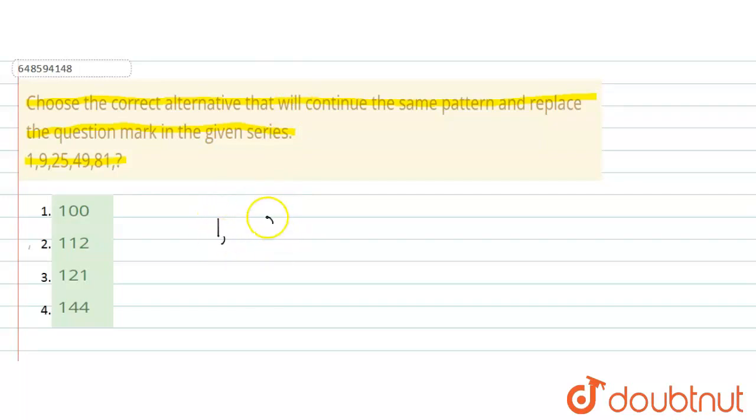Here you have 1, then next is 9, then 25, then 49, and then 81, and then you have the question mark.